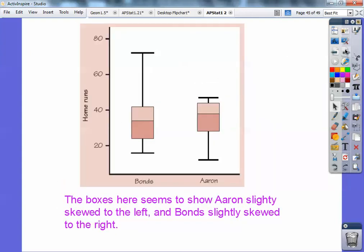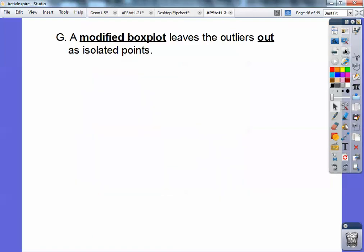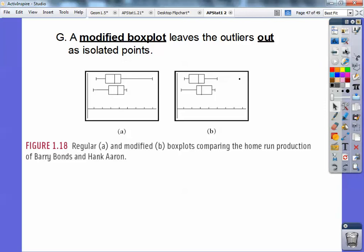Alrighty. So let's see. So again, that's how they did it right there. So Bonds and Aaron's right there. So it's the same box plot just shown vertically. A modified box plot leaves the outliers out as isolated points.